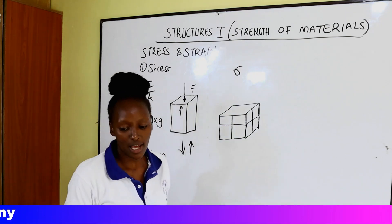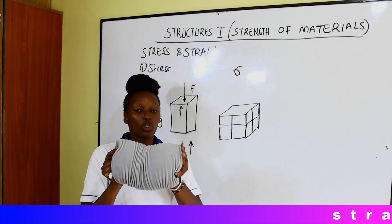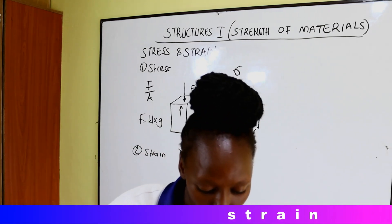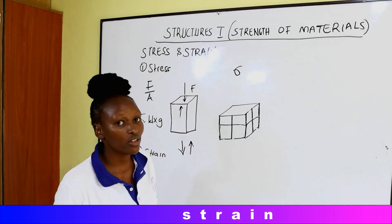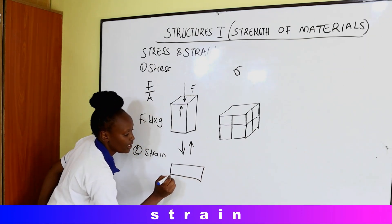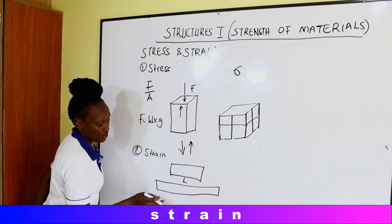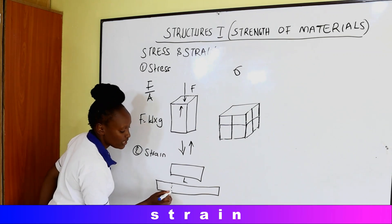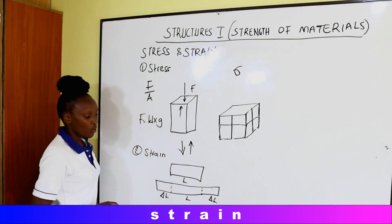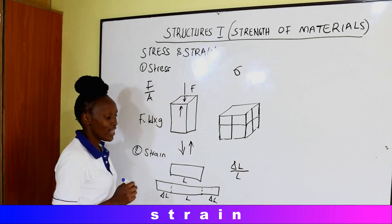Then we have this pillow — it was this size normally, then compression forces acted on it, so it is reduced in size. When we are calculating strain, strain is the measure of deformation of any material. We could have an object of a certain normal length, then it changes due to the action of tensile forces and becomes longer — there is a change in length. When we are calculating strain, strain equals change in length over the original length.